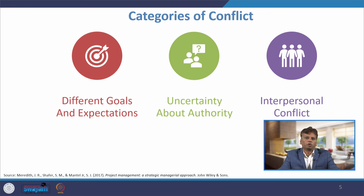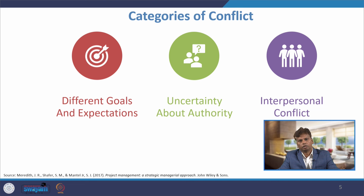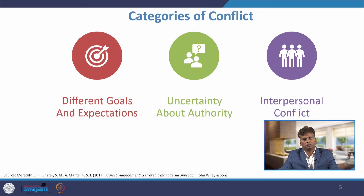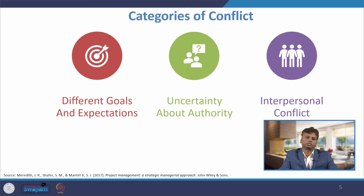Now we will discuss the categories of conflict. There are three sources, or categories, of conflict. The first source is different goals and expectations — the same group having different goals and expectations leads to conflict. The second source is uncertainty about authority — whether a task should be done by person X or person Y creates uncertainty. The third and important source is interpersonal conflict.